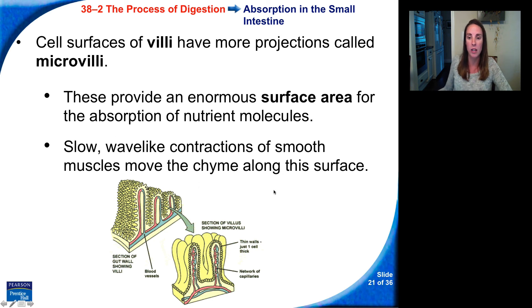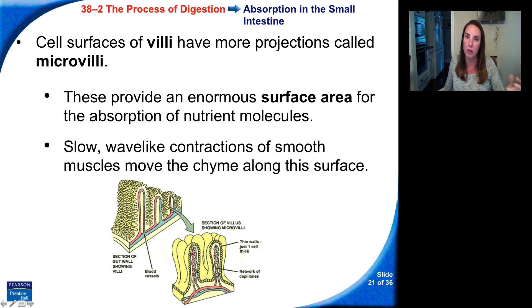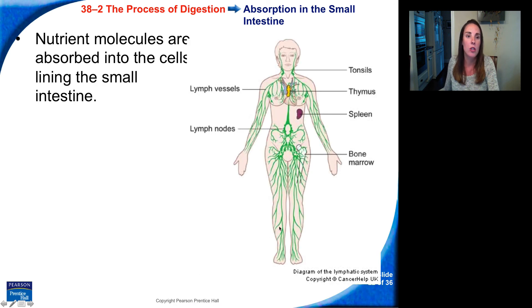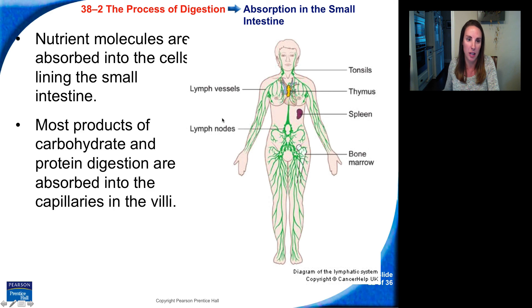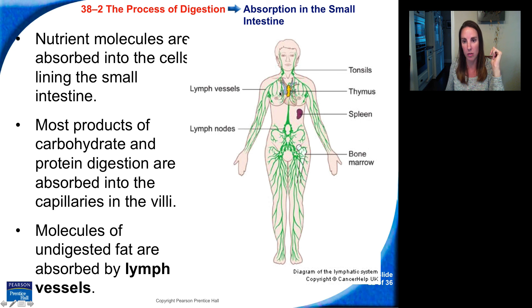Slow wave-like contractions of smooth muscle move the chyme along the surface. On the surface of the villi we have microvilli, and feeding into each is blood vessels and capillaries where the food can go straight into the bloodstream. Most products of carbohydrate and protein digestion are absorbed in capillaries in the villi. Molecules of undigested fat are absorbed by lymph vessels, which run alongside the blood vessels.